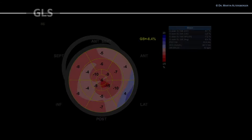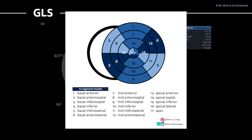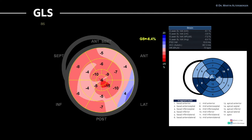To summarize all findings, we can look at the global longitudinal strain of the left ventricle in the 17-segment model. The global longitudinal strain combining all views — the 2-chamber view, the 4-chamber view, and the apical long axis view — is minus 6.4%, confirming an overall severely reduced left ventricular strain.